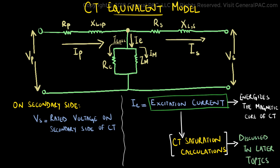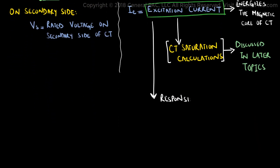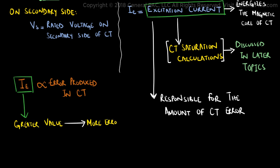Furthermore, this excitation current quantifies the amount of CT error which is present in the circuit. The greater the value of IE, the more error being produced in the current transformer, and vice versa.